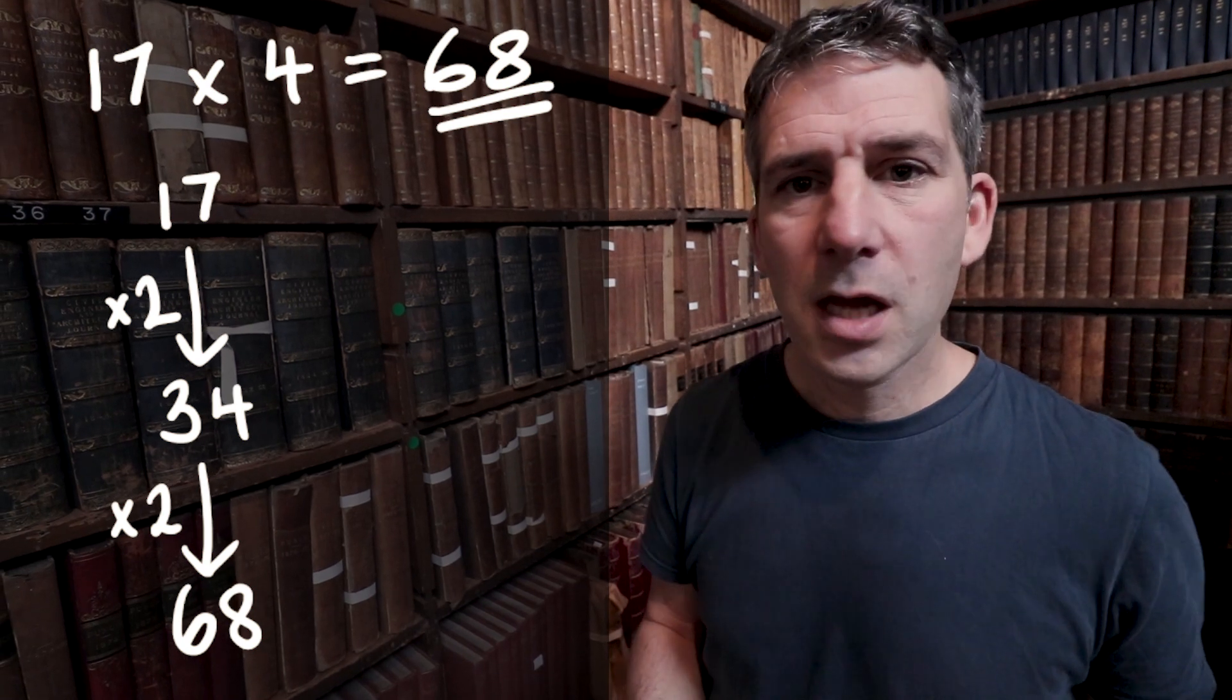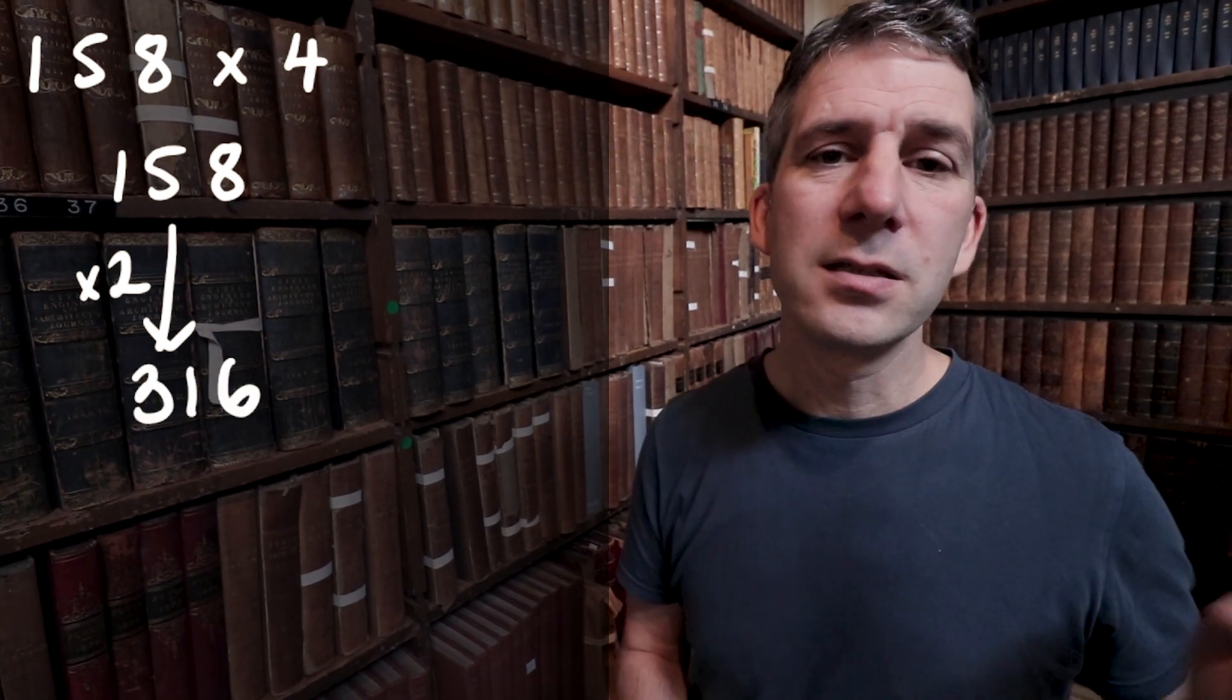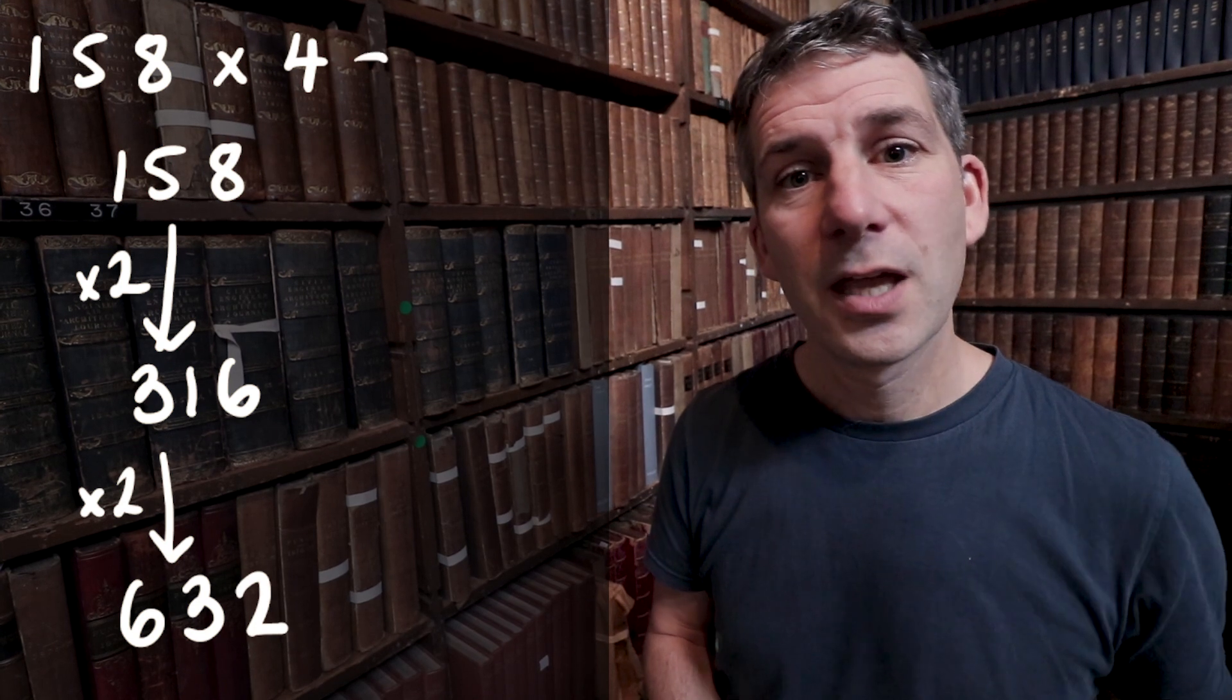Let's say I had a larger number. I want to do, what should we say, 158 times 4. I'm going to double it. So if I double 158, that's 316. And then I'm going to double it again. So 316 times 2 is 632.